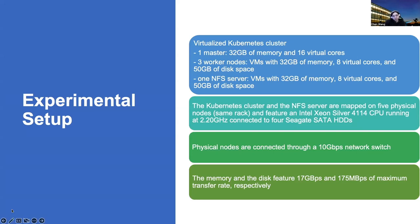The Kubernetes cluster has three workers, each with eight cores, 32 gigabytes of memory, and 50 gigabytes of disk. We set up an NFS server in the same data center in the same rack to emulate the performance of remote storage access — which should be the ideal case, since cloud object storage servers are usually much further away. Memory and disk featured a maximum I/O rate of 17 gigabytes per second and 175 megabytes per second respectively, with a 10 gigabytes per second network switch between servers.